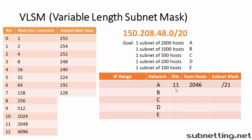Our IP range is going to begin with our network ID, and then it's going to be 2,048 addresses beyond that. So let's find our block size for a slash 21 subnet mask. Counting up from 16 through 21, our block size is 8. Since we're in the third octet, we'll be adding 8 to 48, which is 56 — that's the start of our next network. So this one ends at .55.255.